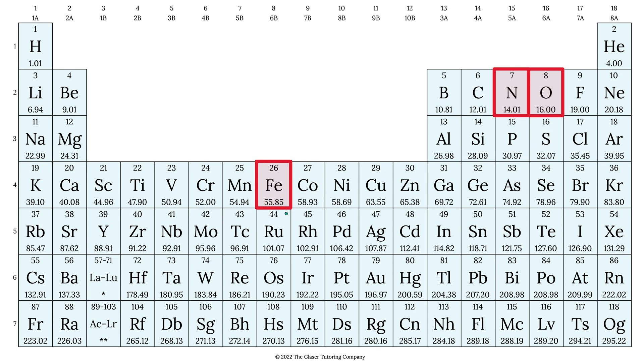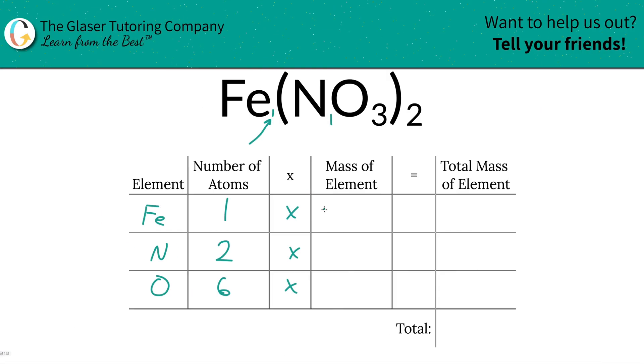Anyway, iron's mass is going to be 55.85. Nitrogen is 14.01, and oxygen is going to be 16. So let's write them in. So this is 55.85. Nitrogen is going to be 14.01, and oxygen is 16.